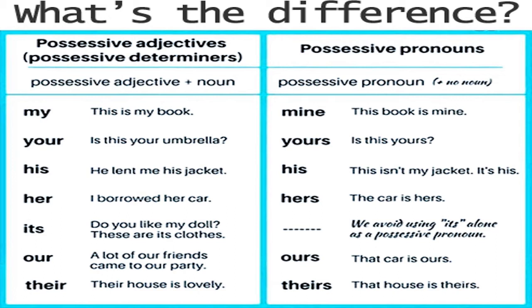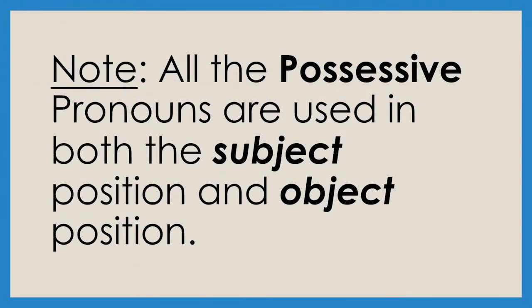Whereas a possessive pronoun never comes before a noun. For example, 'This book is mine.' The possessive pronoun, mine, stands alone. It is not placed before a noun, like possessive adjectives. Note that all the possessive pronouns can be used both in the subject and object positions.